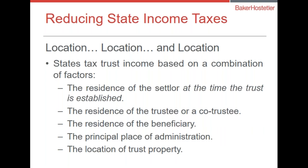States tax trust income based on a combination of factors. The residence of the settlor at the time the trust is established is a big ticket item, as is the residence of the trustee or co-trustee. If you're picking family members like Aunt Tilly and Uncle Bob because they don't charge anything, but they happen to live in California, they might end up being the most expensive trustee selection on the face of the earth. You might want to think long and hard about people who don't charge but live in tax-undesirable places.